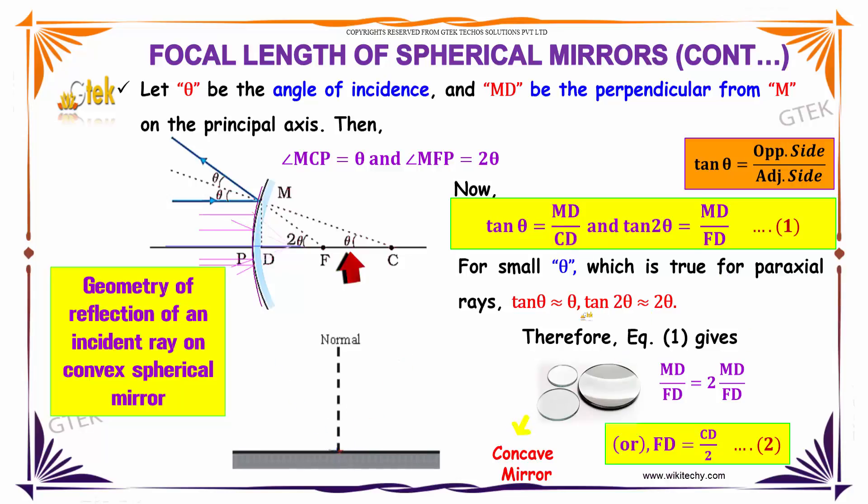So the equation is converted into a different format: MD divided by FD is equal to MD divided by CD.